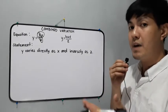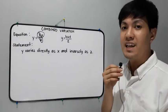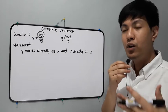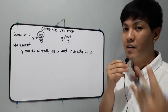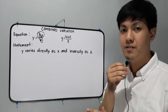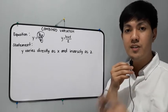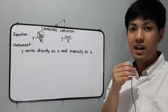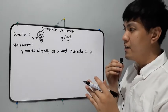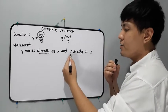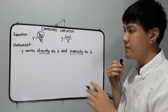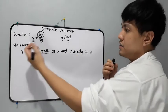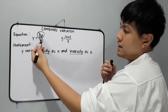For combined variation, we don't use the word 'combinedly' — there's no such word. Since all throughout the discussion about variation we use the title of the variation — directly for direct variation, inversely for inverse variation, jointly for joint variation — for combined variation we use directly and inversely together. So the statement is: y varies directly as x and inversely as z.